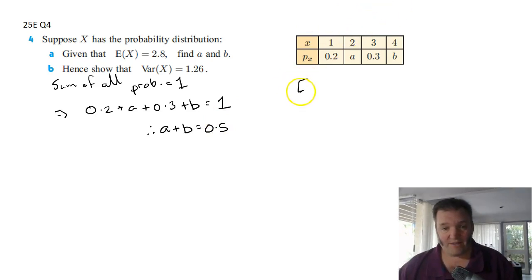The second bit of information we've got is the expected value. Remember, the expected value for a probability distribution is just each outcome multiplied by its probability. So this is 1 by 0.2 plus 2 times a plus 3 by 0.3 plus 4b. And we know that altogether that equals 2.8.